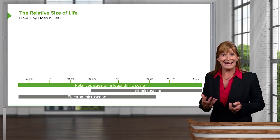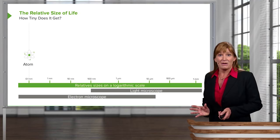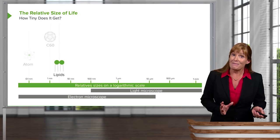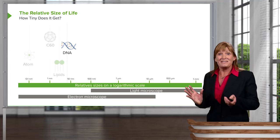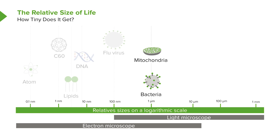Atoms are super, super tiny — there's no way we could see those with the naked eye. We can't even see them under a light microscope. Even when we put 60 or so atoms together, we still can't see that under a light microscope. And even if we look at the macromolecules, which is a lot of what we're going to be spending this course on, we still can't see those. It's not until we start looking at mitochondria and bacteria that we can even start seeing those things under a light microscope.